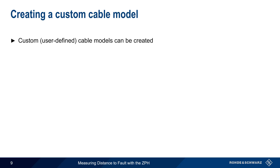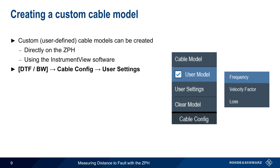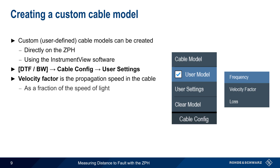It's also possible to create a custom or user-defined cable model. This can be done directly on the ZPH itself, or it can be created on a PC using the free Instrument View software. To create a cable model on the ZPH, press DTF Bandwidth, Cable Config, and User Settings. There are three configuration parameters. Recall that velocity factor describes the speed of propagation in the cable, which is specified as a fraction of the speed of light. Typical values are either 66% or, less often, 82%.